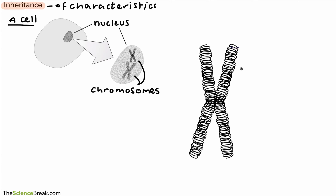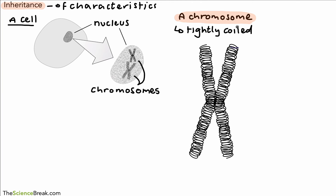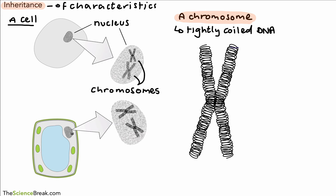If we were to magnify one of those chromosomes, it looks a little bit like this. This is a chromosome — a very important key term. A chromosome is made of tightly coiled DNA. It's important to remember that chromosomes are not only found in animal cells, as shown in the diagram, but also in plant cells.